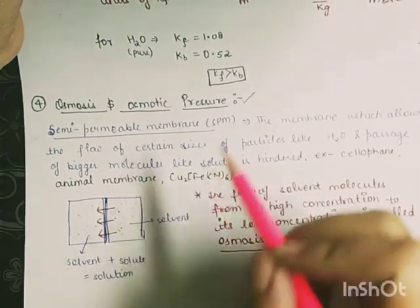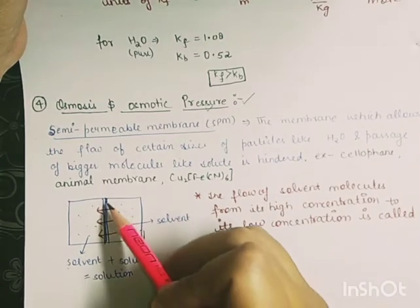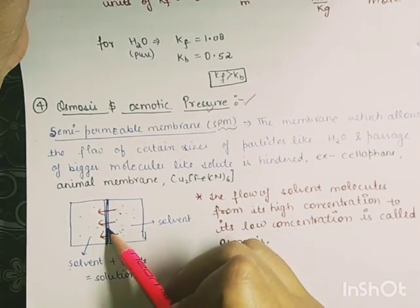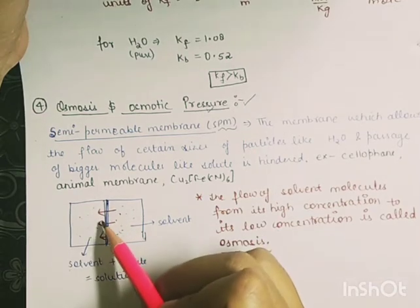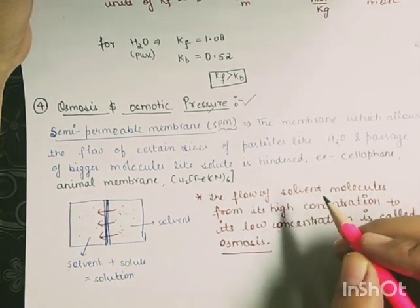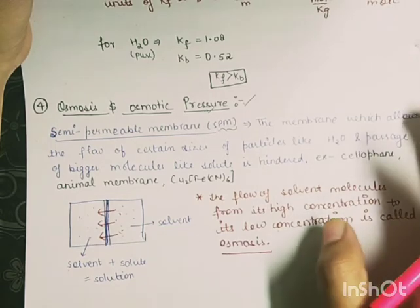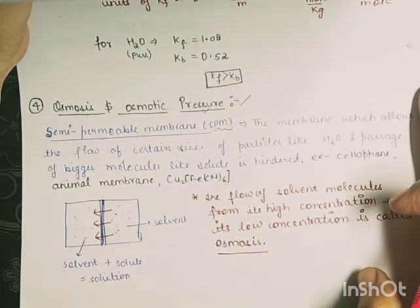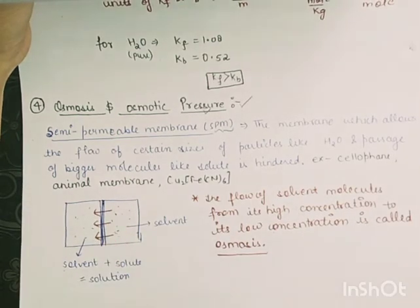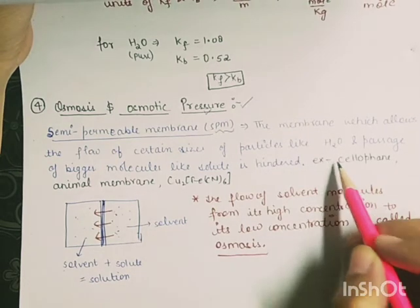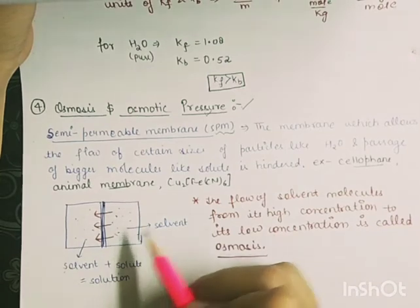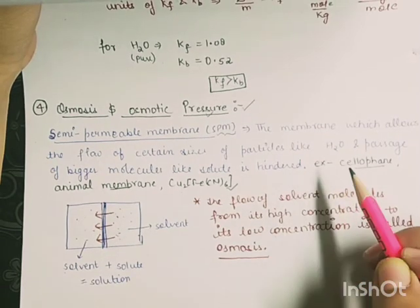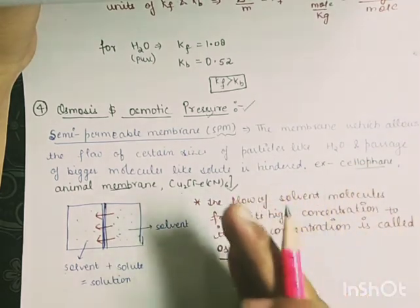First of all, you should know about the semi-permeable membrane. The membrane which allows a certain size of particles to pass through it is called a semi-permeable membrane. Examples include cellophane membrane, animal membrane, and copper ferrocyanide — all of these are called semi-permeable membranes.